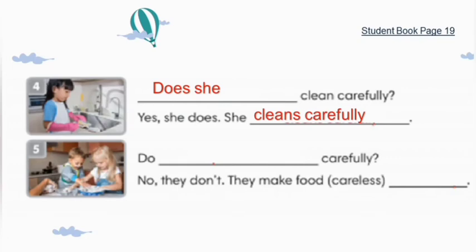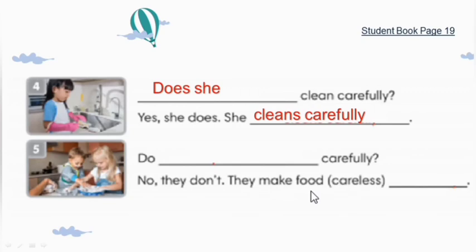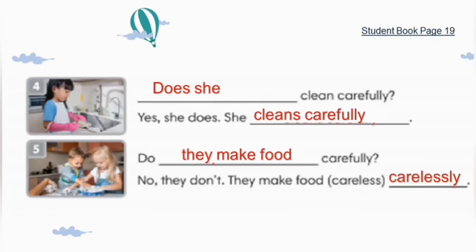Nomor lima — ada gambar dua orang anak. Pada jawabannya ada kata 'they', berarti kata gantinya menggunakan subjek 'they'. Jawabannya 'no', maka pertanyaannya juga yes or no question. Setelah 'do', kita pakai subjek 'they'. Aktivitasnya: make food, membuat makanan. Do they make food carefully? Apakah mereka membuat makanan dengan hati-hati? Jawabannya: No, they don't. They make food carelessly.